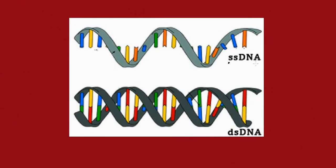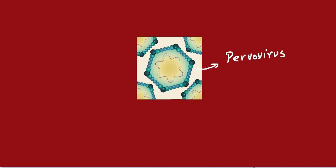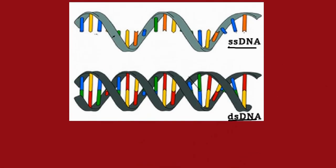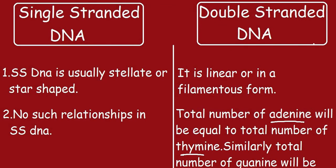The top figure shows a single-stranded DNA with only one strand present. The second figure shows double-stranded DNA with two strands. A virus composed of single-stranded DNA is also shown — this is the structure of a phage, and it is composed of single-stranded DNA.